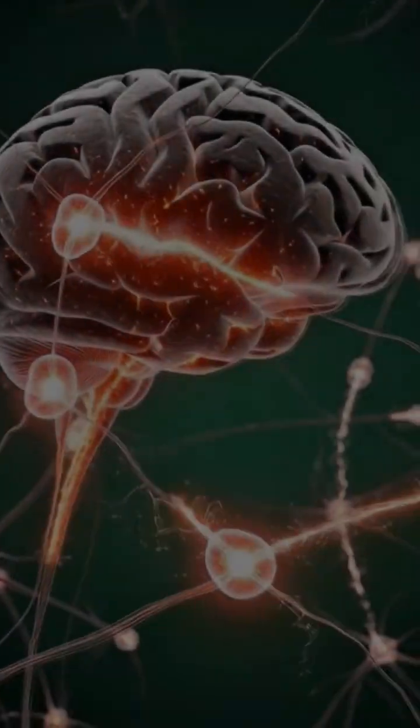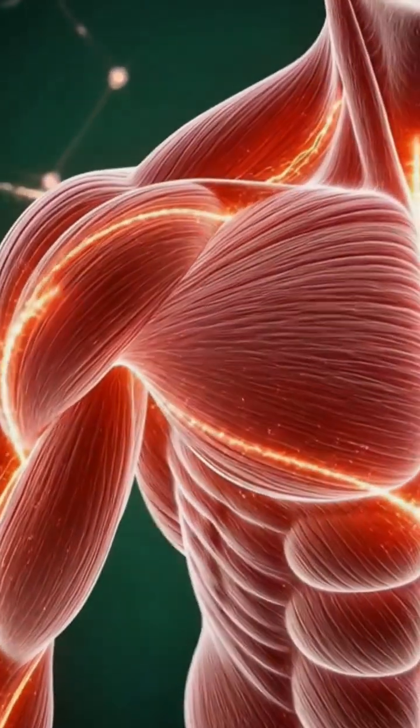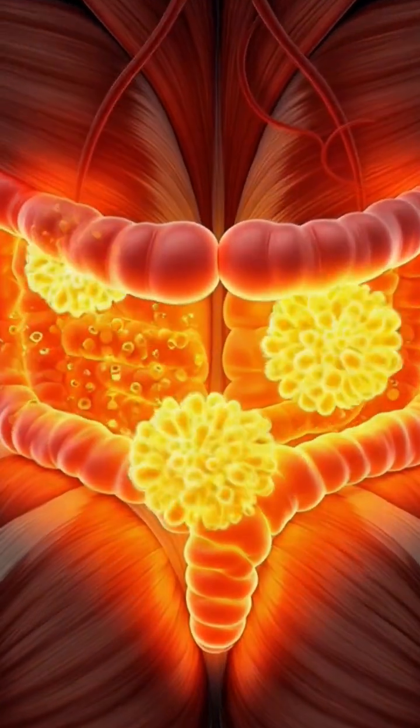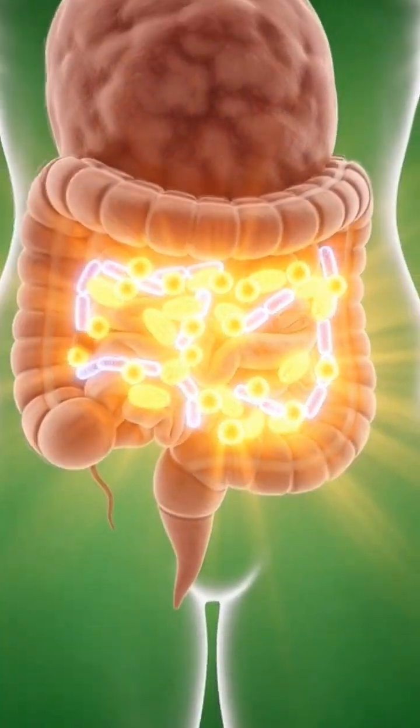Kujur boosts brain function by activating neurons and strengthening synaptic activity, helping improve focus and clarity. It nourishes the muscles as its energy-rich nutrients flow through the bloodstream, supporting strength and performance.